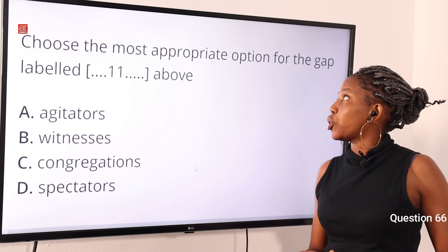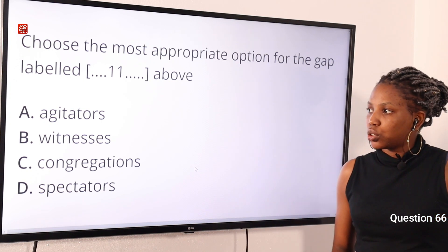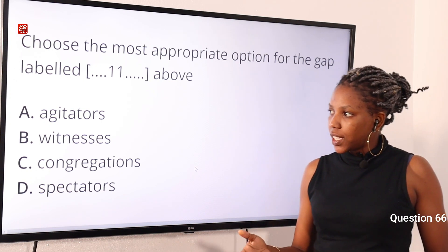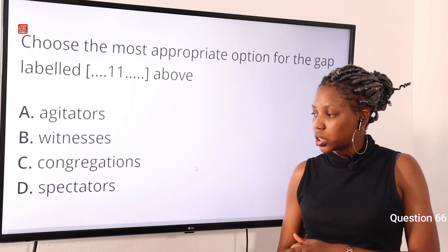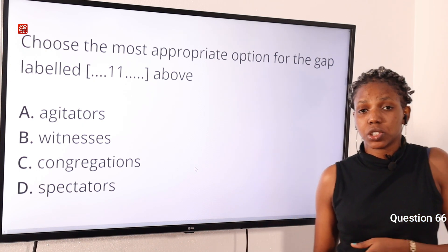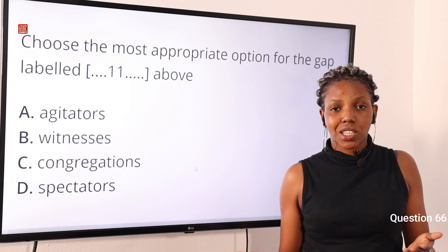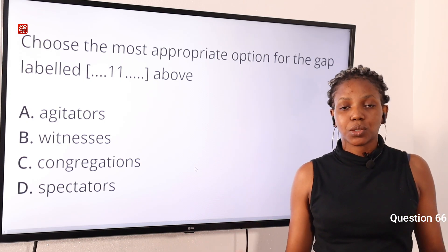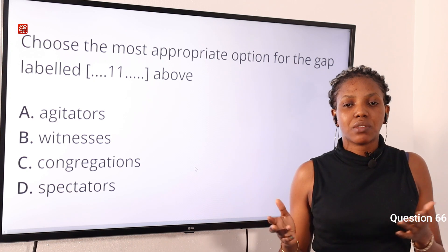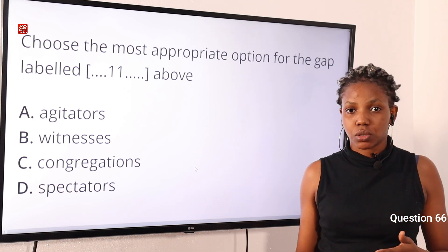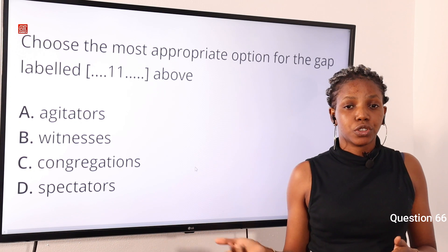Question 66: Choose the most appropriate option for the gap — option A: agitators, option B: witnesses, option C: congregations, option D: spectators. The answer is option D, spectators. If you read this passage, you will see it has to do with a boxing match, and the people who gather around to watch the match are called spectators. So option D is the correct answer.